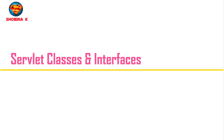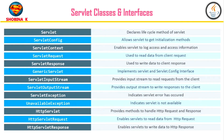Now let's see some useful classes and interfaces of servlets. The Servlet interface is used to declare the lifecycle methods. ServletConfig allows a servlet to get initialization methods. ServletContext enables the servlet to log access and access information from methods. ServletRequest is used to read data from the client request, and ServletResponse is used to write data back. GenericServlet implements the Servlet and ServletConfig interfaces. ServletInputStream provides a read stream from the client; ServletOutputStream provides an output stream to write response to the client. ServletException indicates whether a servlet error has occurred, and UnavailableException tells you the servlet is unavailable. HttpServlet provides methods to handle HTTP requests and responses. HttpServletRequest reads data from the HTTP request, and HttpServletResponse writes data to the HTTP response. That's all for this session — thank you so much for watching.